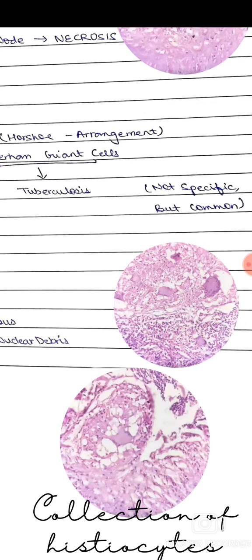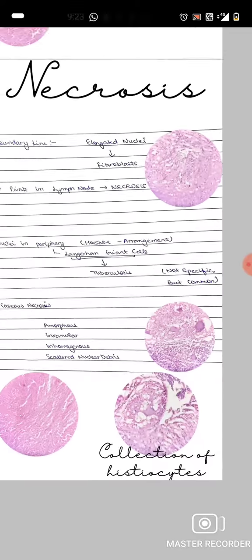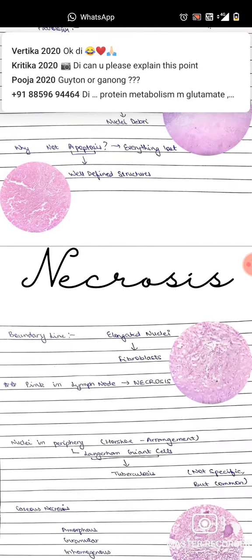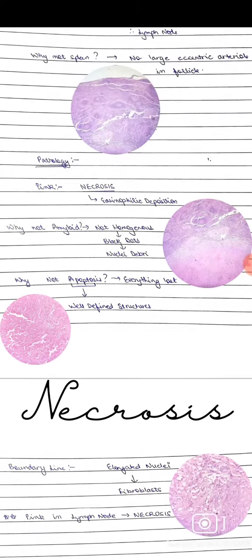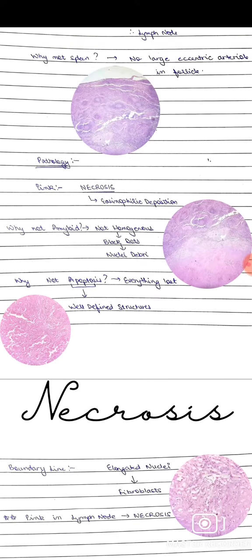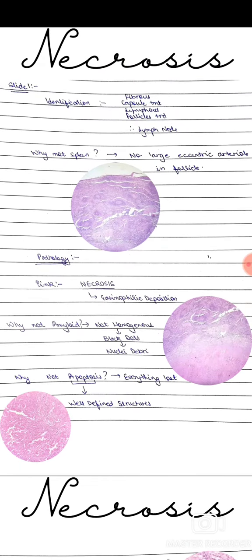Finally, we can also see collections of histiocytes. This was all about the histopathological slide of necrosis in a lymph node. Thank you.